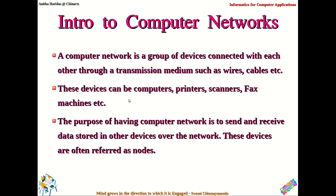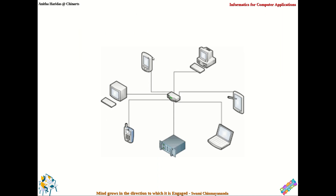All these devices can be computers or printers, scanners or fax machines — these devices can be connected together in a network. If you see what is the purpose of having this computer network, you are all experiencing it: we want to send and receive data stored in some other devices over the network. All these devices are sometimes referred to as nodes in your computer network. This is a diagrammatic representation of a computer network.